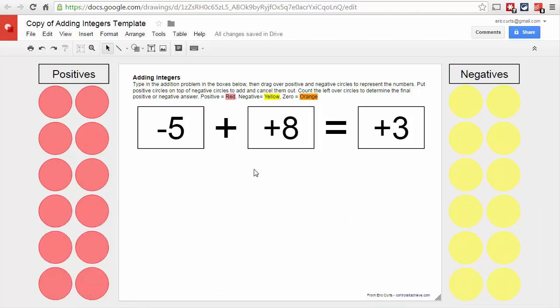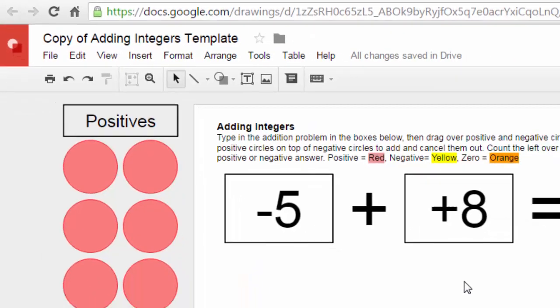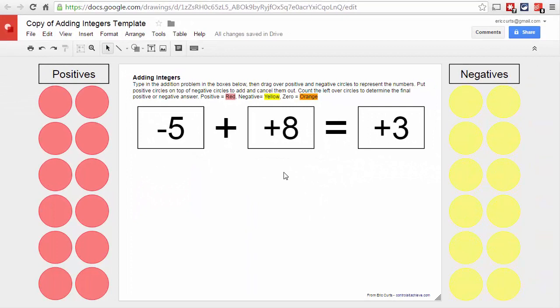Now when you do open up this template, it is view only so you will need to make a copy of it. You'll need to go up to File and then Make a Copy so that you get your own version that you can then edit as well. I've already done that with this one here.